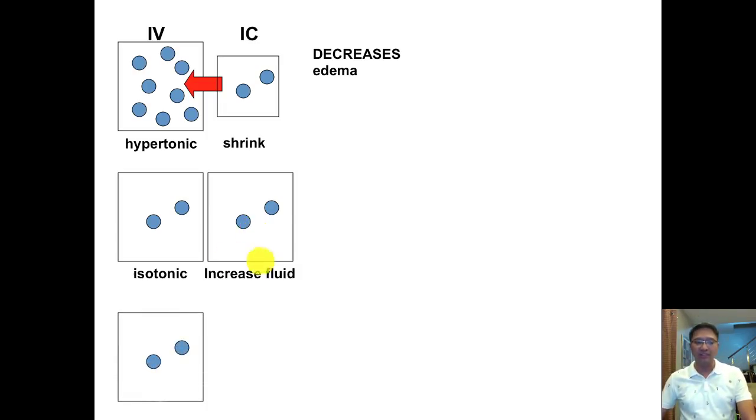Now, what about this one? If we're going to look at the IV, it's two particles. If we're going to look at the IC, we have lots of particles. So the IV fluid here, compared with this, you have lower number of particles compared with the IC.